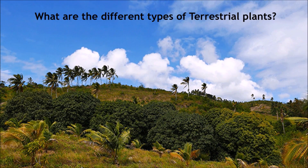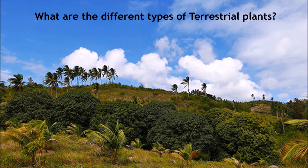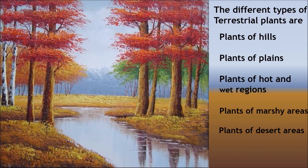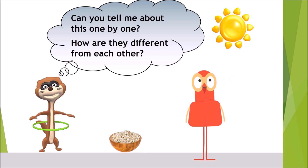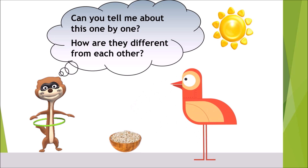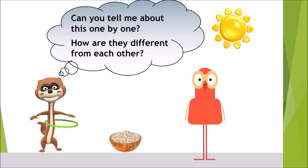What are the different types of terrestrial plants? The different types of terrestrial plants are plants of hills, plants of plains, plants of hot and wet regions, plants of marshy areas, and plants of desert areas. Can you tell me about these one by one? How are they different from each other?